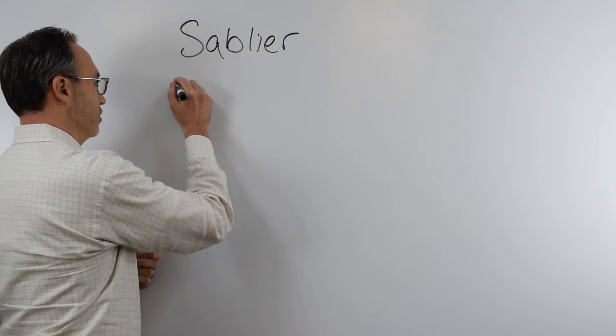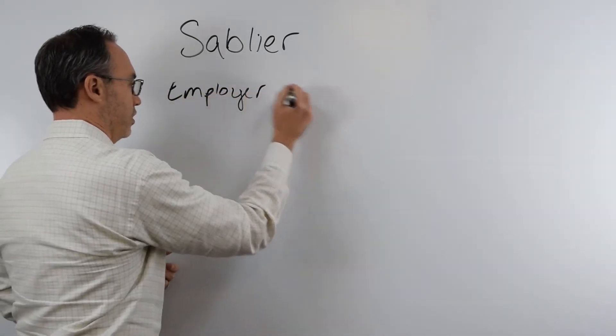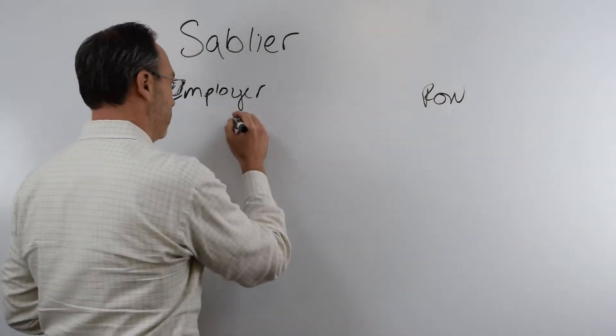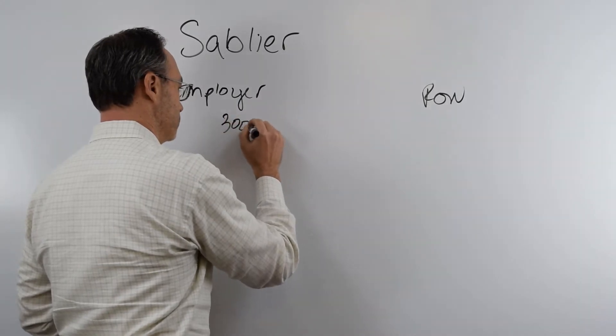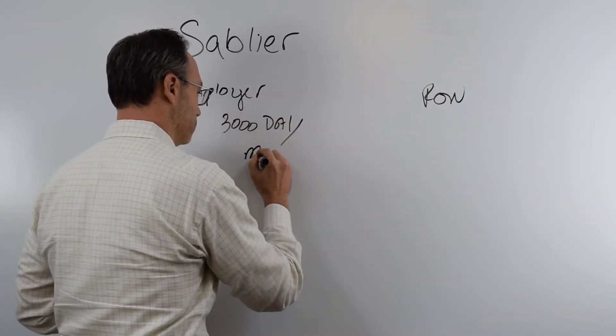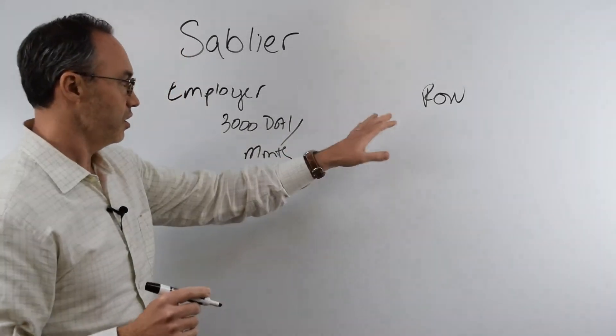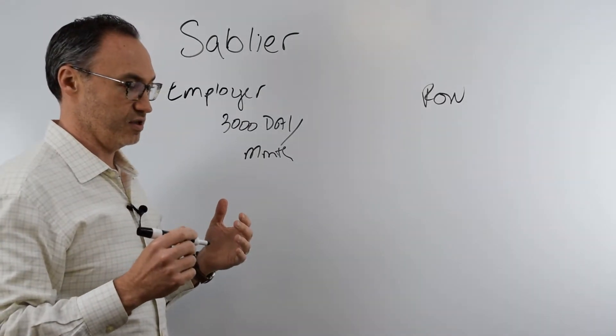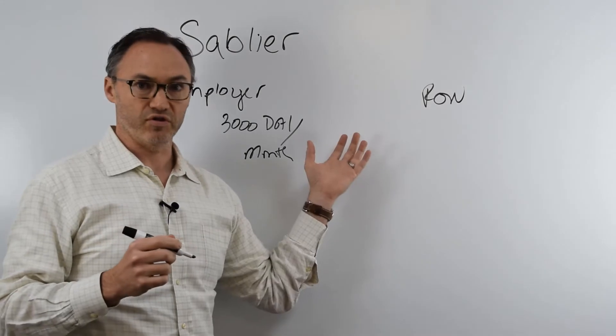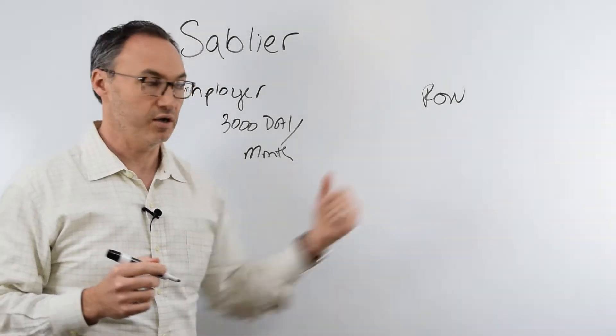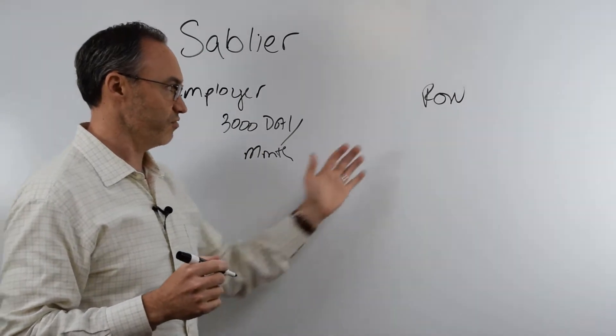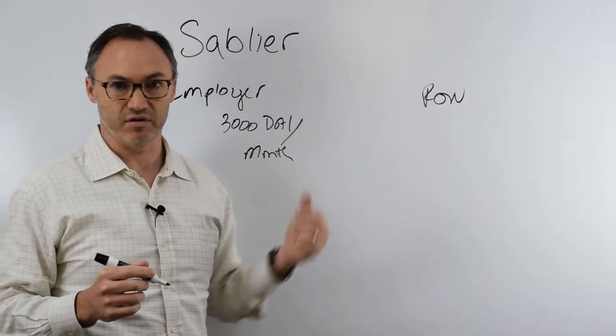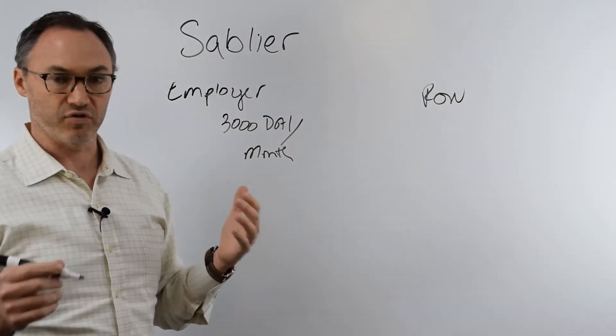So if I am the employer and I have an employee named Ron, and let's say I'm paying Ron 3,000 DAI per month. Now Ron is earning this money as he's working, but the key is he wants to make sure that he doesn't do all this work and then at the end of the month I don't pay him. I want to make sure that if Ron up and leaves me mid-month that he hasn't gotten 3,000 DAI and he's only done 1,500 DAI's worth of work. So those are the issues.